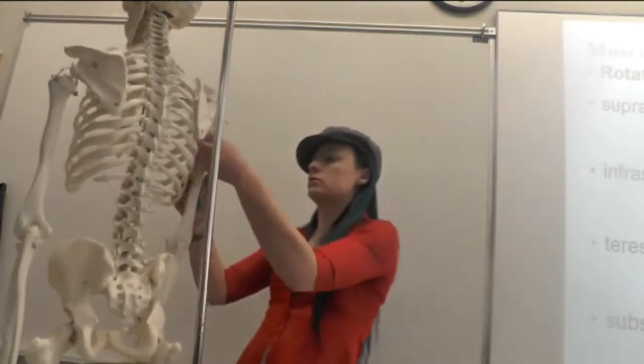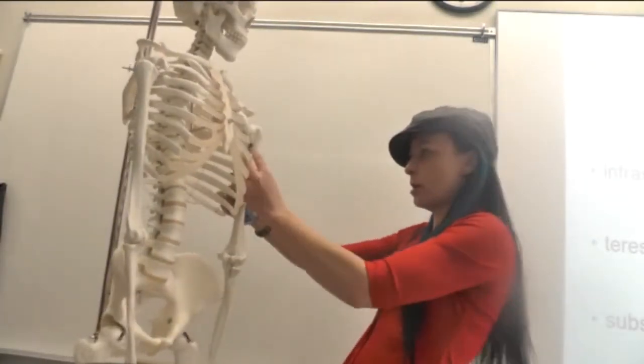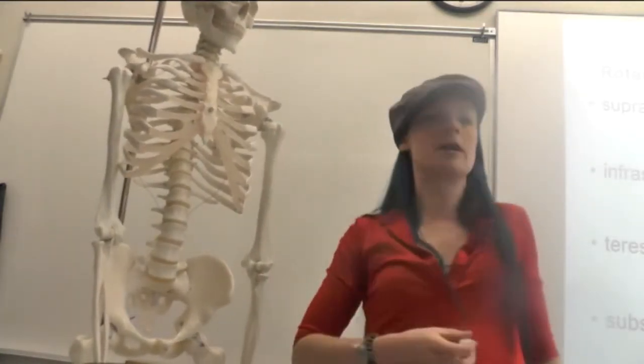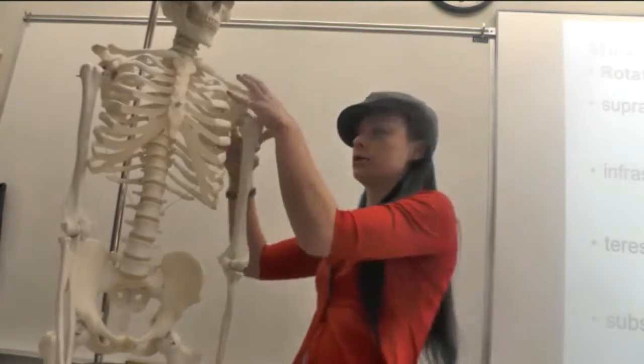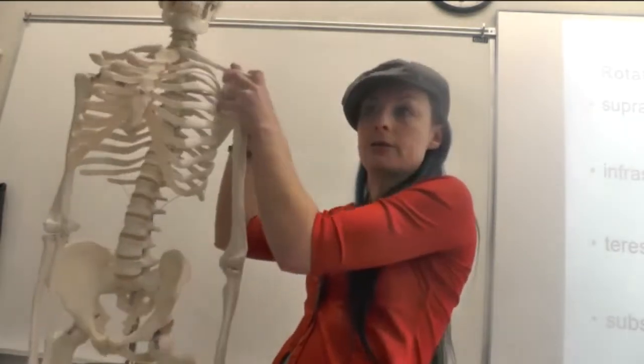So latissimus dorsi grabs right on the inside of your humerus here, and when you pull it, it immediately rotates a little bit. You've got a whole bunch of other muscles around your rotator cuff that make your rotator cuff, all supporting this joint.